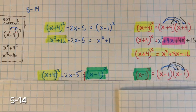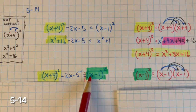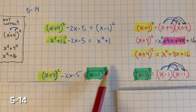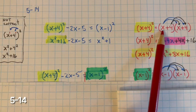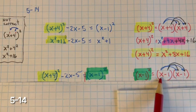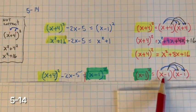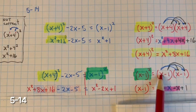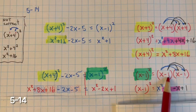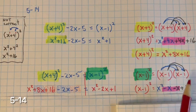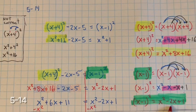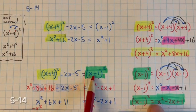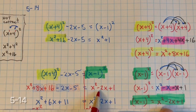I'll do the same for (x − 1) squared — two groups of (x − 1). Distributing: x multiplied by x is x squared; x multiplied by negative 1 is negative x; negative 1 multiplied by x is negative x; and negative 1 multiplied by negative 1 is positive 1. Combining like terms, negative x plus negative x is negative 2x. So (x − 1) squared simplifies to x squared minus 2x plus 1.